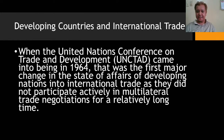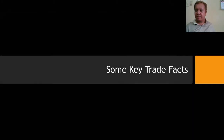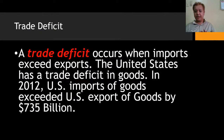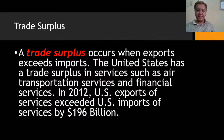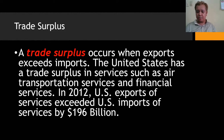Developing countries and international trade: the United Nations Conference on Trade and Development, UNCTAD, came into being in 1964 as the first major change in the participation of developing nations in international trade, as they had not actively participated in multilateral trade negotiations for a relatively long time. Key trade facts: a trade deficit occurs when imports exceed exports — for example, in 2012, US imports of goods exceeded exports by 735 billion dollars. A trade surplus occurs when exports exceed imports — in 2012, US exports of services exceeded imports by 196 billion dollars.